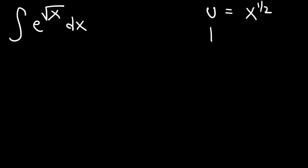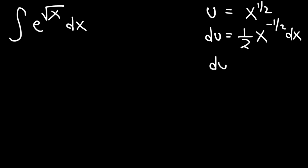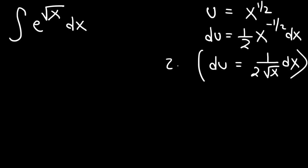Now we'll need to find du using the power rule. So it's going to be 1/2 times x, and then 1/2 minus 1 is negative 1/2. So we can rewrite that as 1 over 2x to the positive 1/2, or simply 1 over 2 times the square root of x. Now we need to get dx by itself, so let's multiply both sides by 2 square root of x.